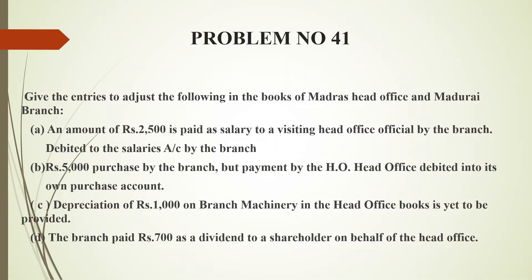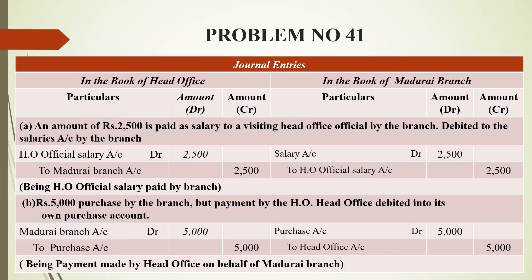In the previous problem, we worked out in the head office book. But in this problem, covering branch and head office, we will enter the adjustment entries. We will adjust the head office and branch transactions.